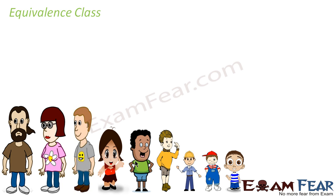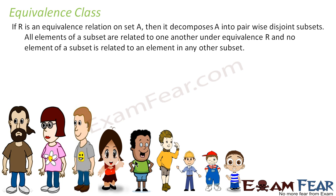The concept of equivalence class is a new term, so please pay a little attention here. If R is an equivalence relation on set A, then it decomposes A into pairwise disjoint subsets, where all elements of each subset are related to one another under the relation, and no element of a subset is related to any element outside it.